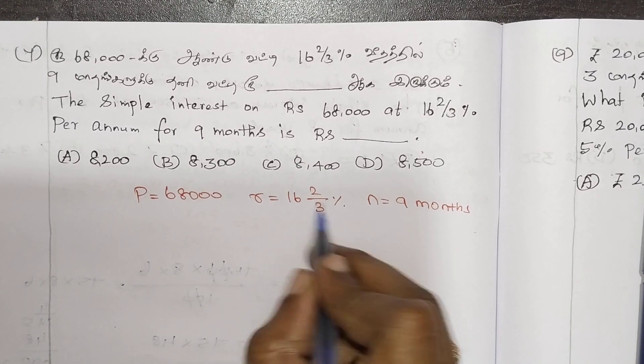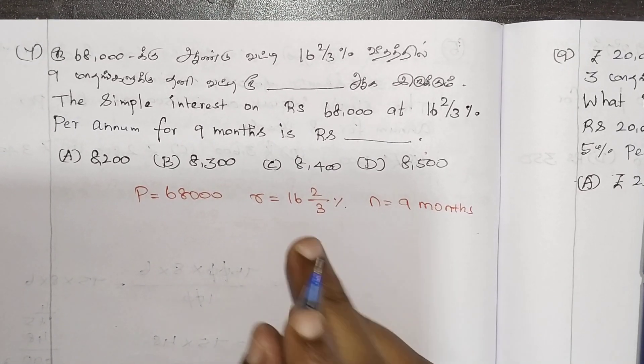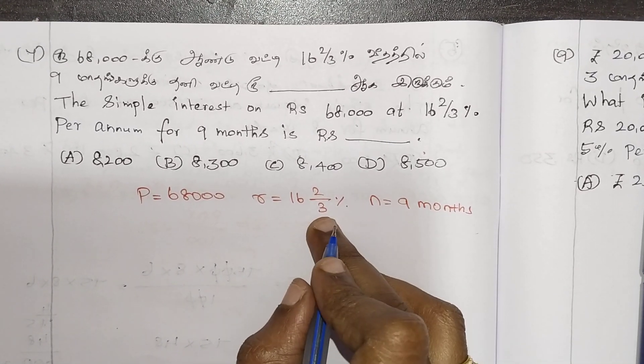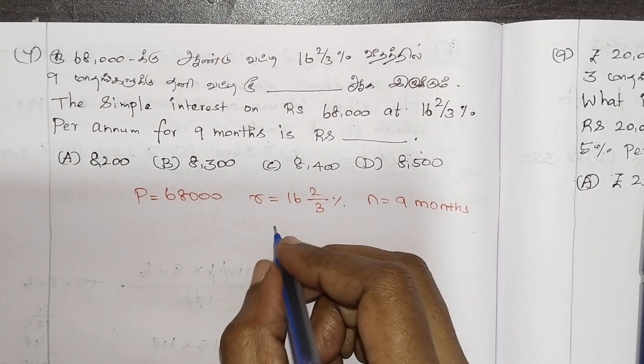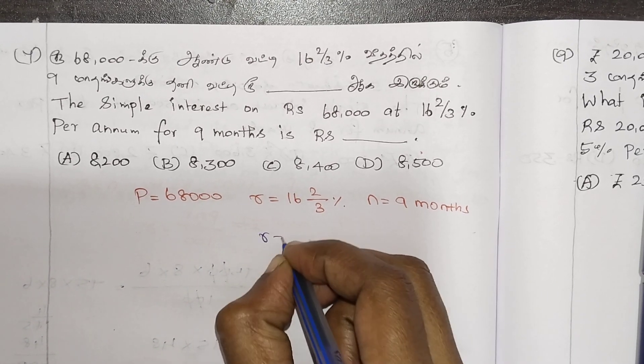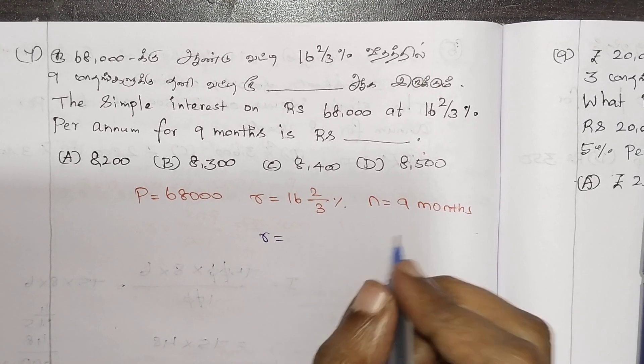If the rate of interest is a mixed fraction, you can convert it to a normal fraction or proper fraction.